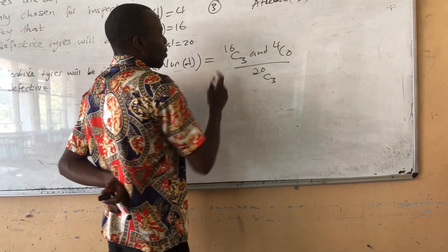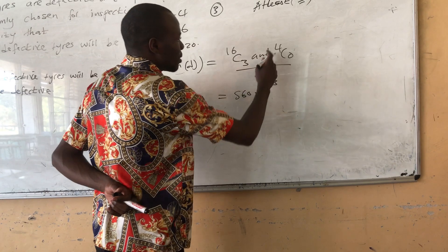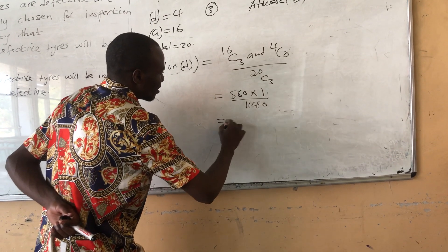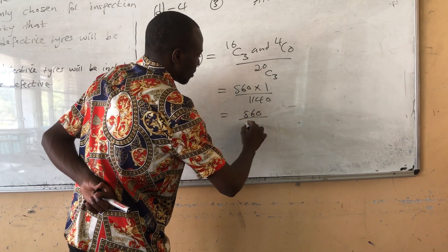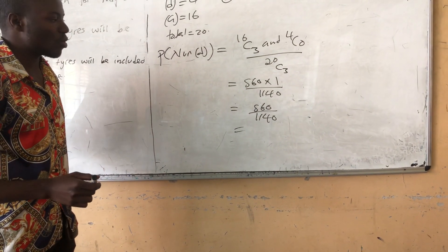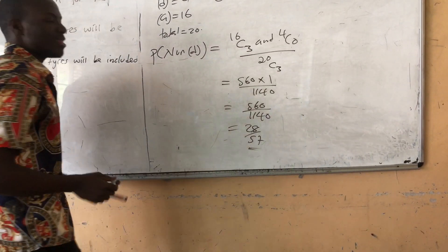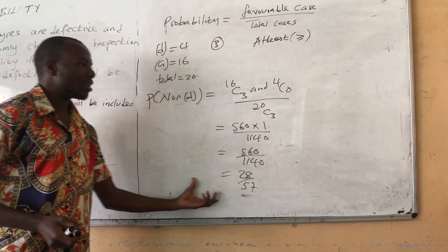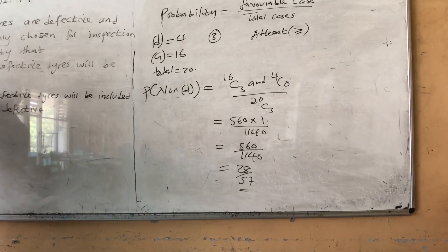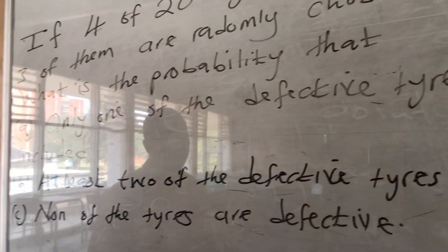16 combine 3 gives 560, times 1 (since 4 choose 0 equals 1), over 1140. So 560 over 1140. When you reduce the fraction, you get 28 over 57. This is the probability of choosing three tires where none of them are defective — 28 over 57.